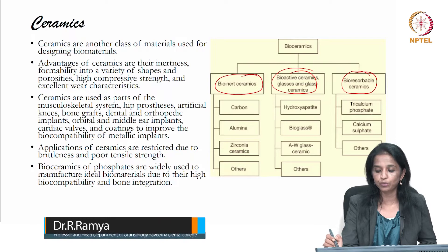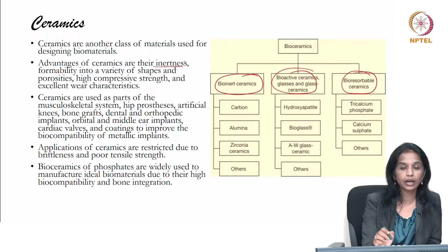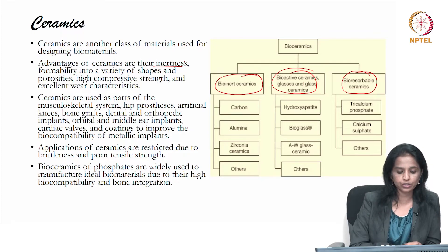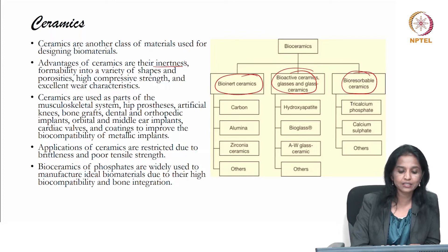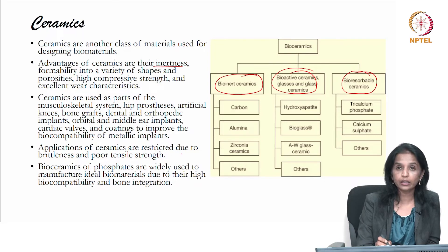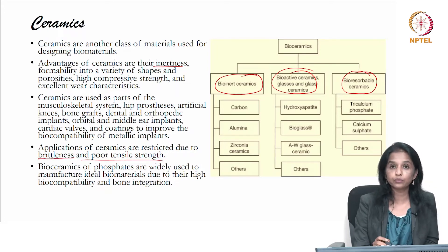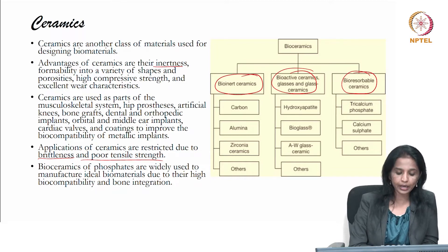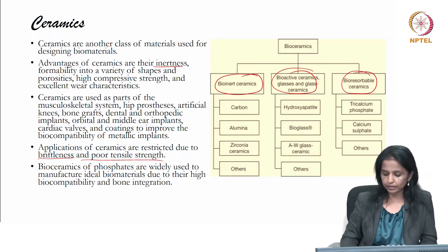Bioresorbable ceramics include tricalcium phosphate and calcium sulphates. Advantages of ceramics are that some are inert and can be formed into various structures depending on their porosities and compressive strength. The disadvantage compared to metals is that ceramics are more brittle and have poor tensile strength. Bioceramics of phosphates, particularly tricalcium phosphates, are widely preferred due to excellent biocompatibility and bone integration.